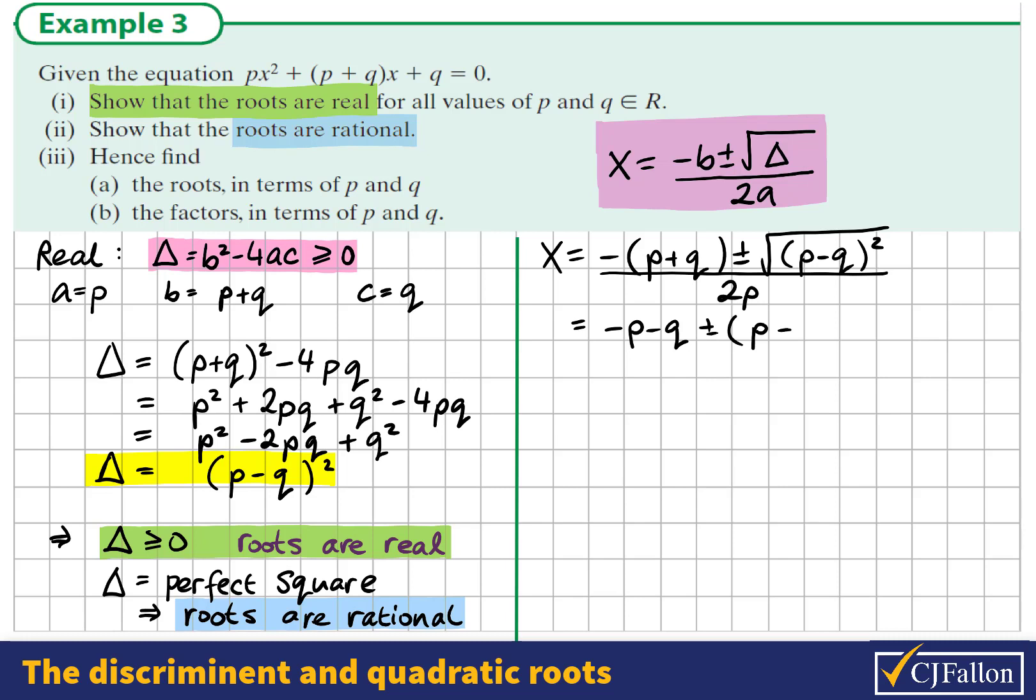Here we see the square root and square are undoing each other. So we just get the (p - q) in that part of the equation.